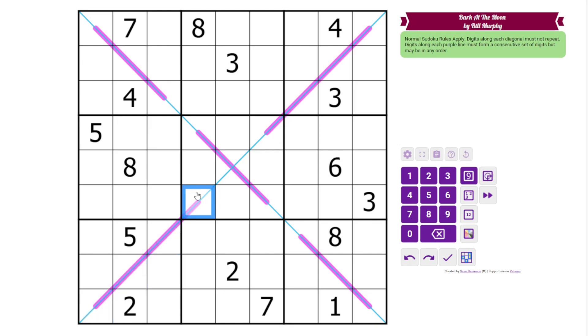So for example, this could be something like five, three, six, four, because we have three through six just in an arbitrary order. Those are the rules.